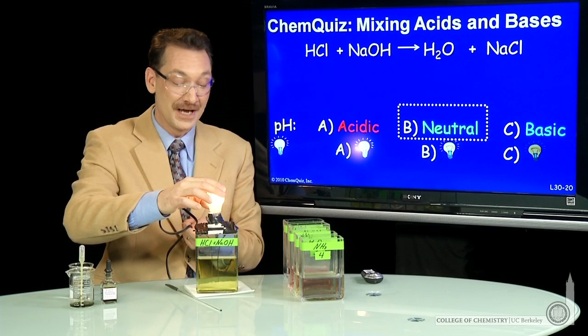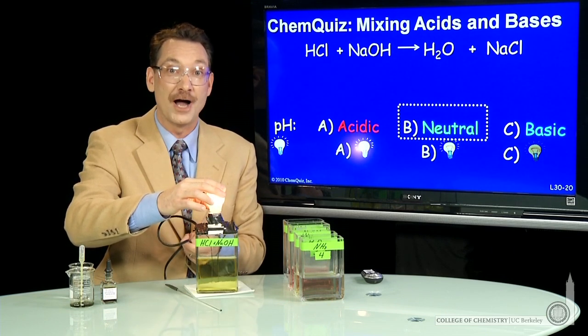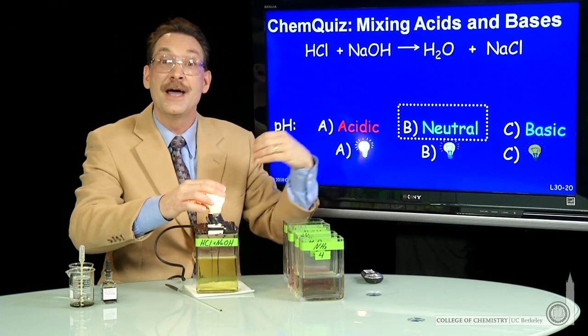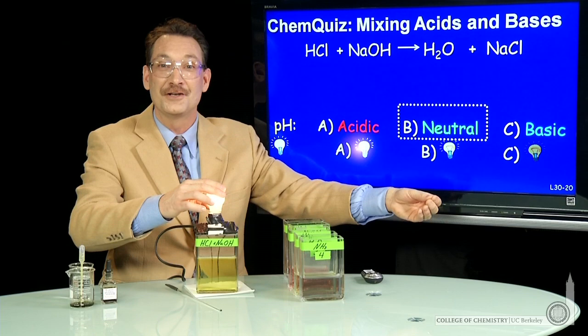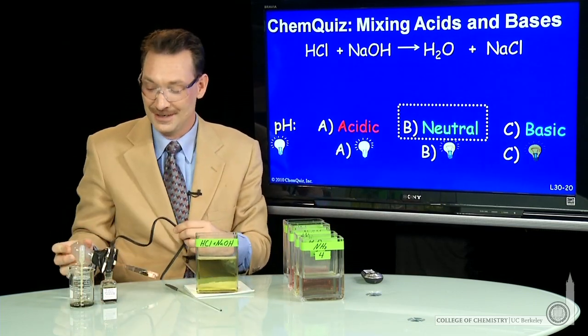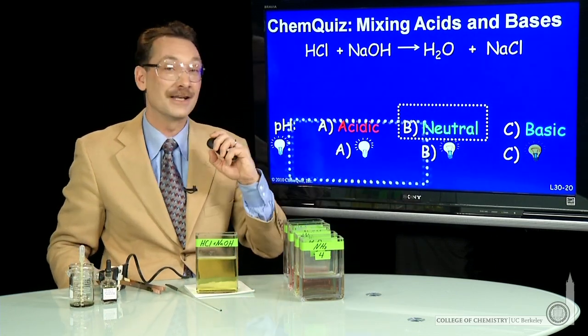So that's interesting. We mixed the strong acid and the strong base, and we got a bright light. Why is that? Because this salt that's produced, sodium chloride, completely ionizes to form sodium and chlorine ions. They stay in solution at a neutral pH, but give you a bright light.